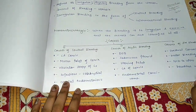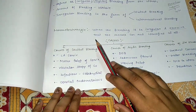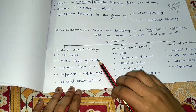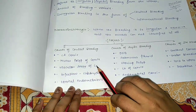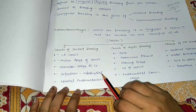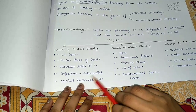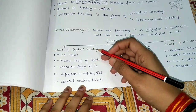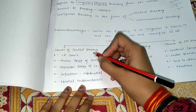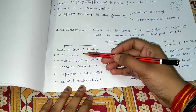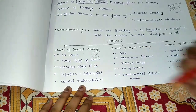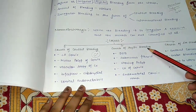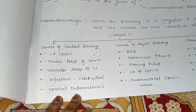The causes of Metrorrhagia include causes of contact bleeding. Contact bleeding can be caused by: carcinoma of the cervix, mucous polyp of the cervix, vascular atopy of the cervix, infections, cervical endometriosis — so all causes of contact bleeding are related to the cervix.